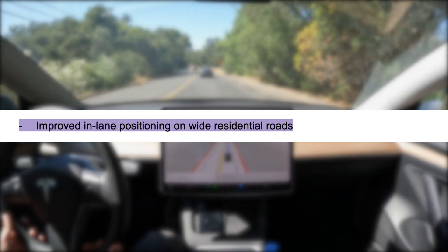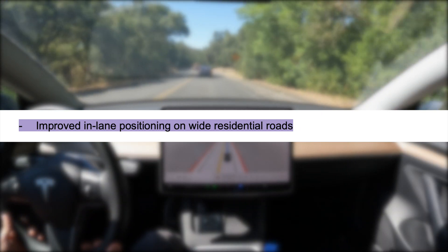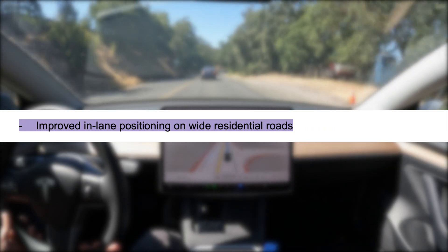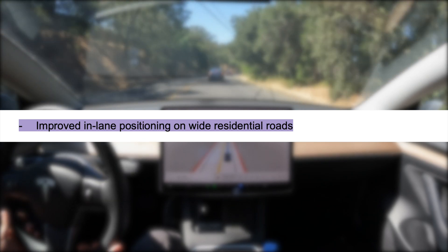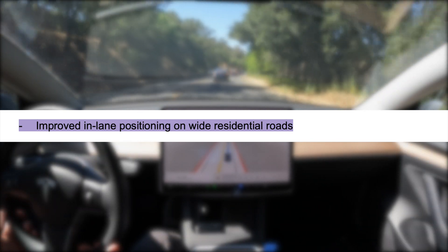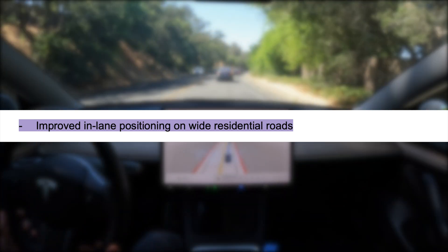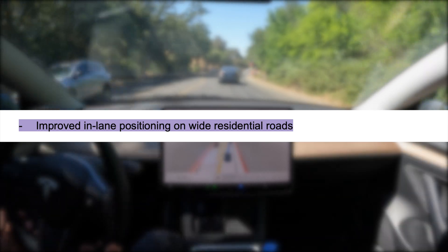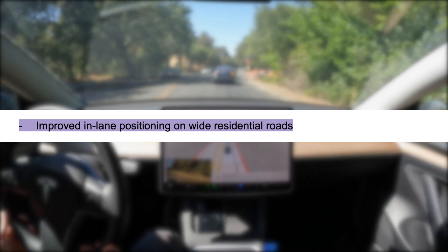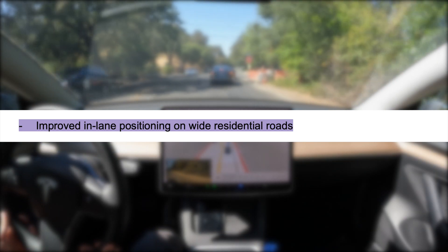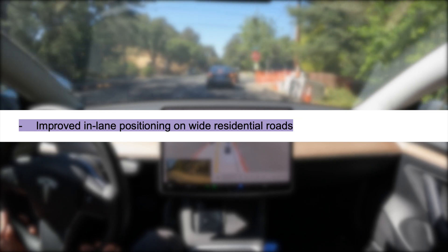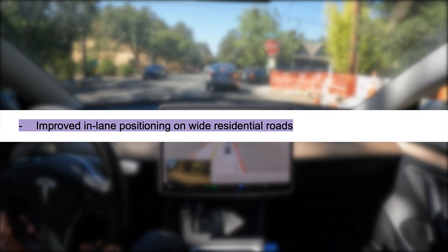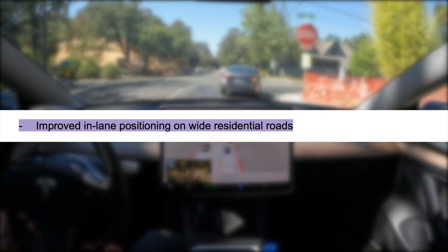The last note I want to highlight is improved in-lane positioning on wide residential roads. There's nothing wrong with driving in the middle of the road when there aren't other cars around, but FSD beta often won't move over to the right quickly enough, which can result in confusion from oncoming traffic and a poor driving experience. This will be a very welcome improvement.